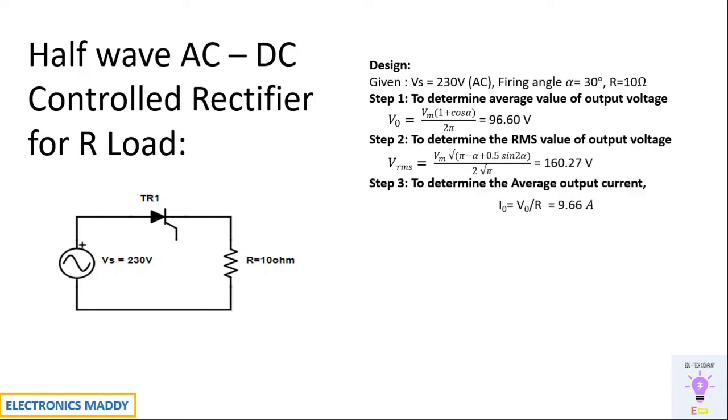The next step is to determine the average output current. Once we have Vout, we will be able to find out Iout easily, and it is 9.66 Amps in this case.